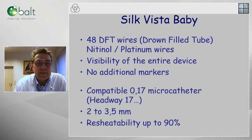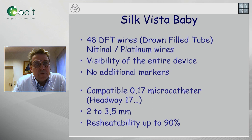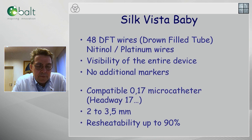The stent first came out as the Silk Vista in small size, called the baby, with 84 wires made of DFT — drawn filled tube — wires, which means that each of those wires is visible, making the whole device entirely visible without the need for additional markers. The Vista baby goes through a 17 microcatheter, a catheter with a 0.017 inch lumen — definitely the smallest flow diverter compatible with the smallest microcatheters. Size ranges between 2 and 3.5 millimeters. Another advantage is that it can be resheathed up to 90%.